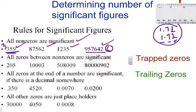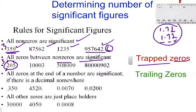Now, all zeros between non-zero digits are significant. We call those trapped zeros, because they're between or trapped between significant numbers. So this number in front would have three significant digits, because 2 is significant and 5 is also significant from rule number one, and since this zero is trapped, it is also significant — so that's three significant numbers. For this number in the back, the 8 is significant and the 9 is significant, so all these zeros will be significant.